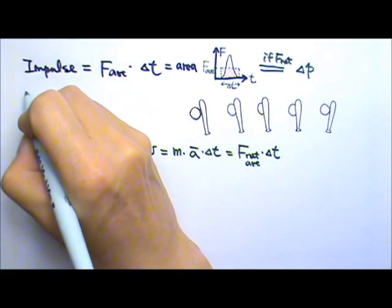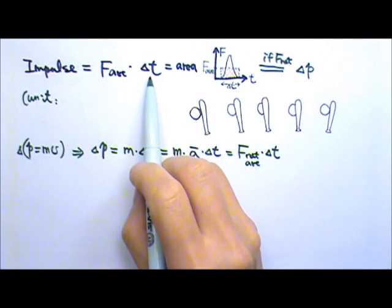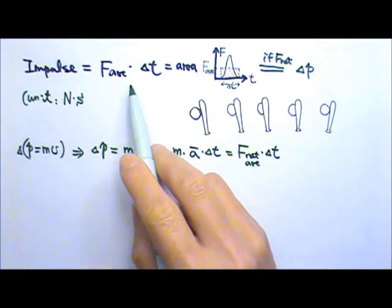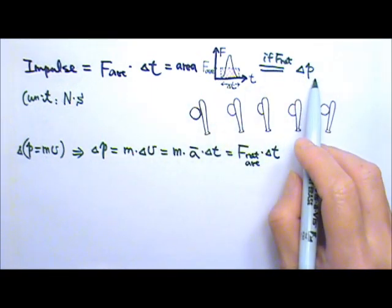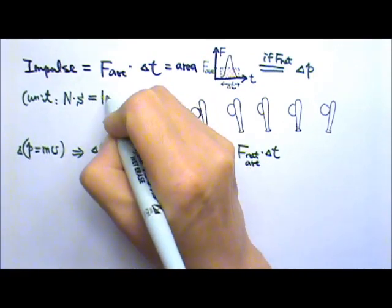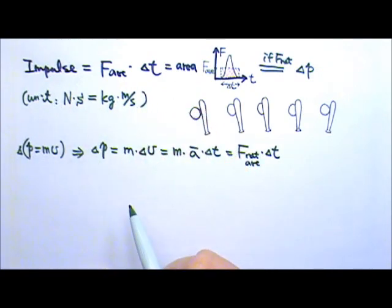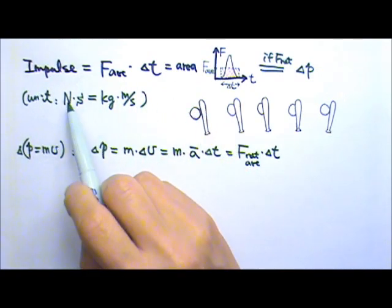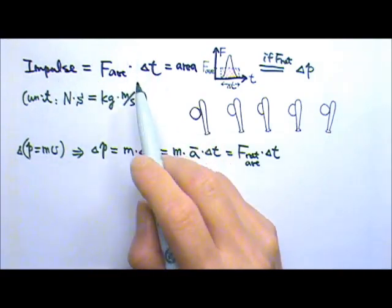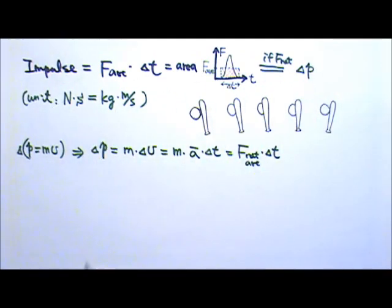What is the unit for impulse? Since it is force times time, that means it is newtons times seconds. But it is also the change in momentum, and momentum is mass times velocity, so this is also kilograms times meters per second. They're the same — we can use either one. But often people would use newton-seconds for impulse and kilograms meters per second for momentum.